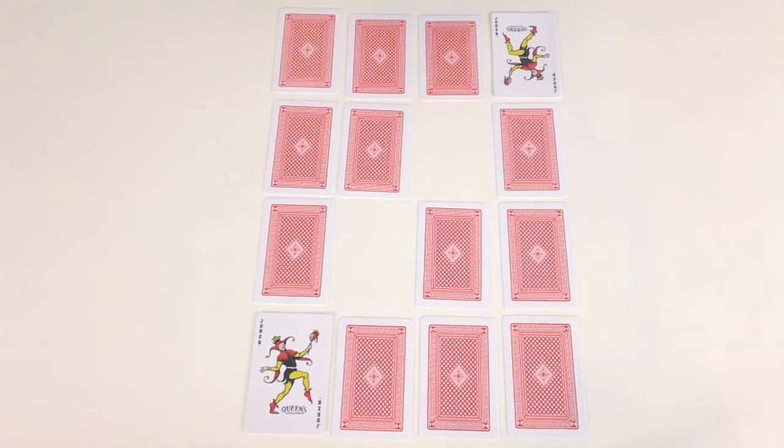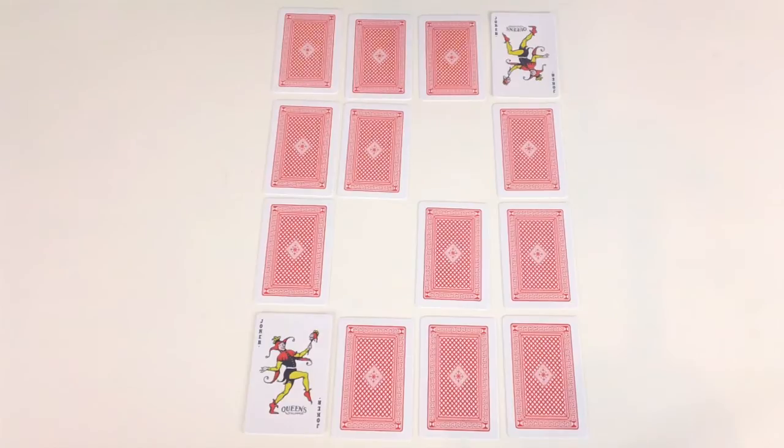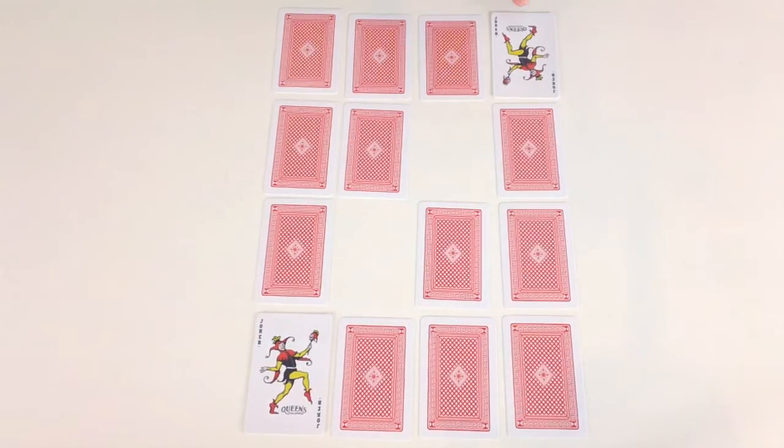Now the aim of the game is to get your joker from one corner to the other corner and you do this by sliding any cards on the board. Now you can slide any cards including your own card but not your opposition's joker.